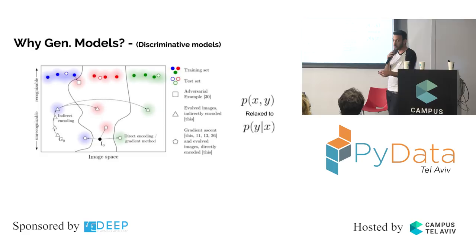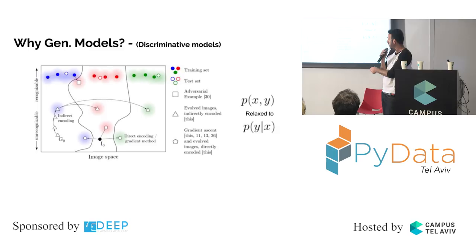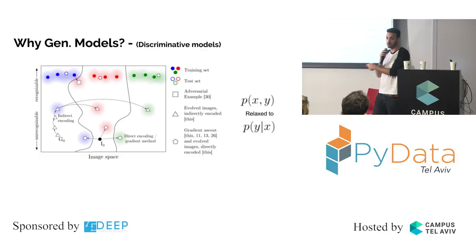When people invented logistic regression, they did this relaxation and were proud of it, because computing the joint probability of X and Y together is really hard. So instead, you calculate the conditional probability — which maps directly to this hyperplane. You're not modeling the cluster; you're only modeling the boundary that divides between two clusters.